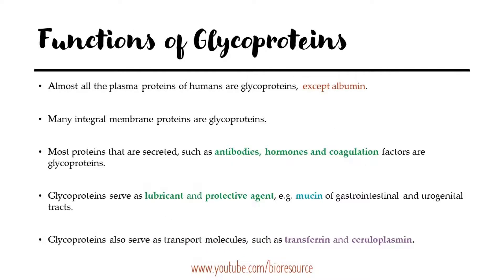Coming to the functions of glycoproteins, almost all the plasma proteins of humans are glycoproteins except albumin. Many integral membrane proteins are also glycoproteins. Most proteins that are secreted, such as antibodies, hormones, and coagulation factors, are glycoproteins.